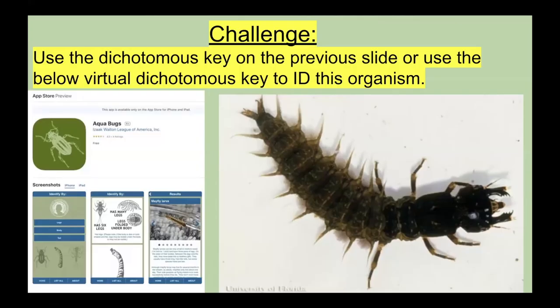Your challenge is to use either the dichotomous key on the previous slide or the virtual dichotomous key to identify an unknown organism. There's a free app called AquaBugs that has steps to help identify unknown organisms. That's all for this segment.